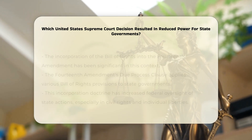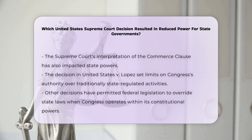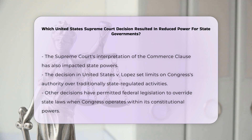The Supreme Court's interpretation of the Commerce Clause has also affected state powers. Decisions like United States v. López have established limits on Congress's power to regulate activities traditionally within state authority. But other decisions have allowed federal legislation to supersede state laws when Congress acts within its constitutional powers.